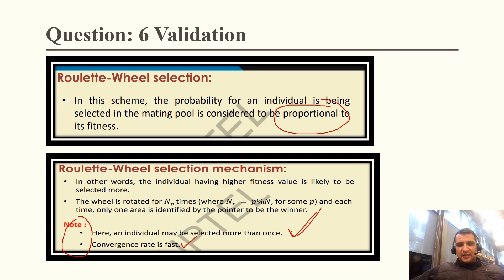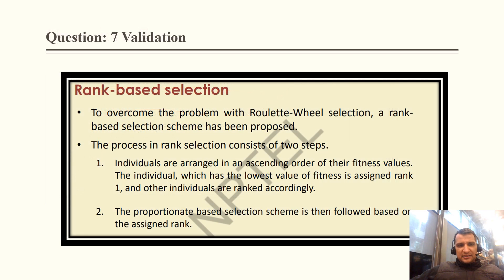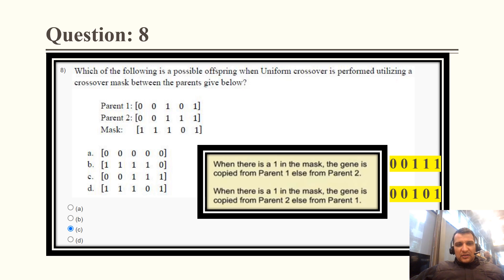Question 7: In rank-based selection scheme, individuals are ranked according to ascending order of their fitness. This is the correct statement, so the option is correct. To overcome the problem with roulette wheel selection, rank-based selection has been proposed, where individuals are arranged in ascending order of their fitness value.